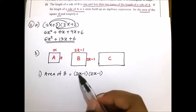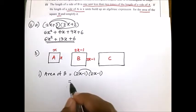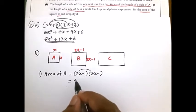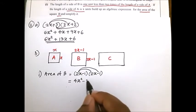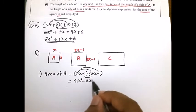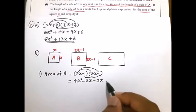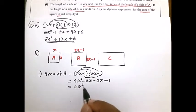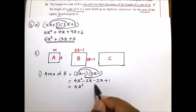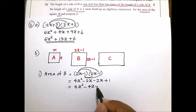Simplify by removing brackets. 2x multiplied by 2x: 2 multiplied by 2 is 4, x multiplied by x is x squared, giving 4x². Then 2x multiplied by minus 1 gives minus 2x, and minus 1 multiplied by 2x gives minus 2x, and minus 1 multiplied by minus 1 gives plus 1. Combining: minus 2x and minus 2x gives minus 4x plus 1. So area of B equals 4x² − 4x + 1.